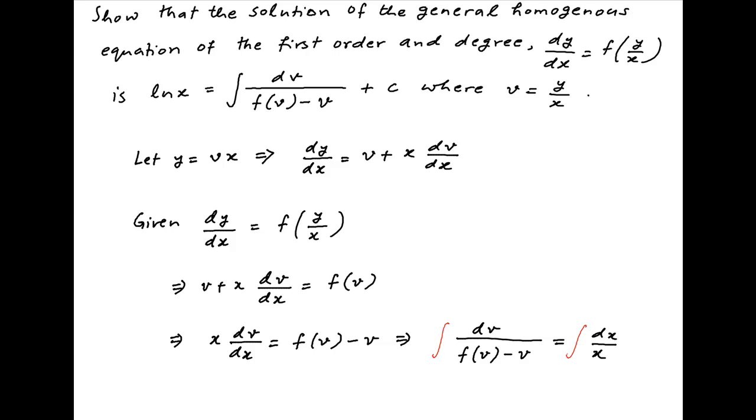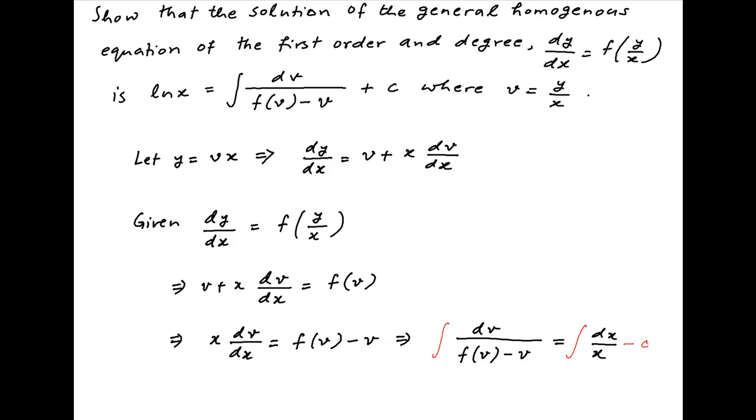Now integrating both sides and introducing a constant of integration say minus c on the right hand side we get ln of x is equal to integral of dv upon f of v minus v plus the constant of integration where v is equal to y upon x. And this is the required solution.